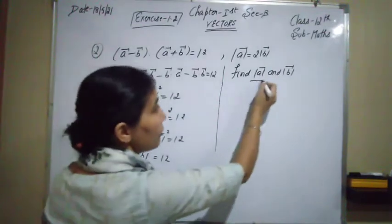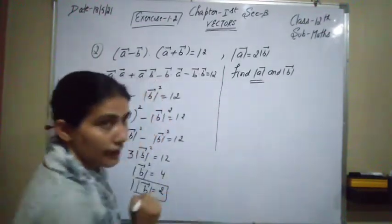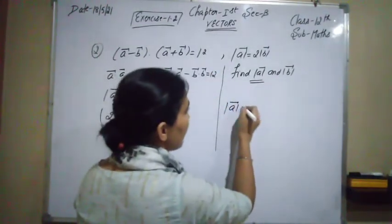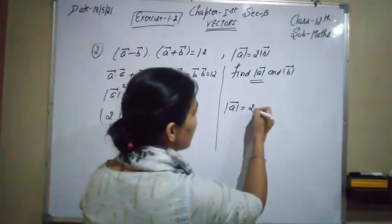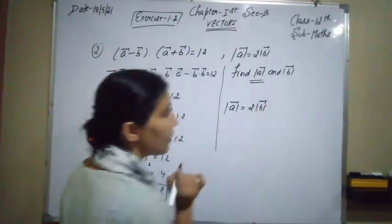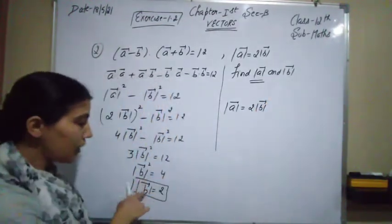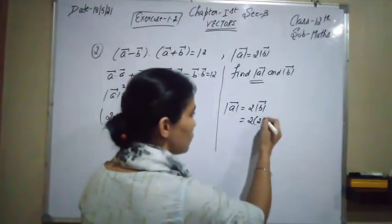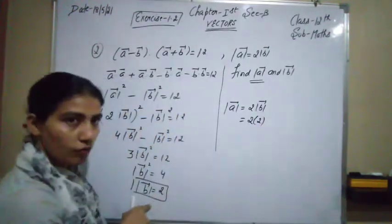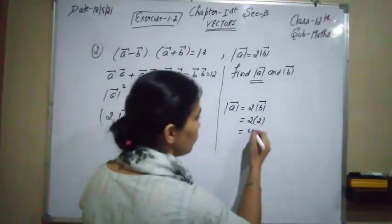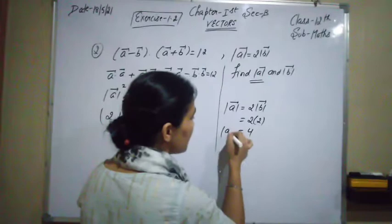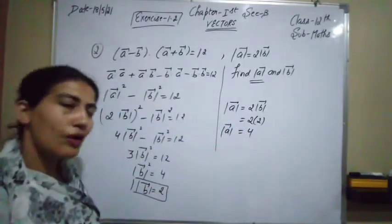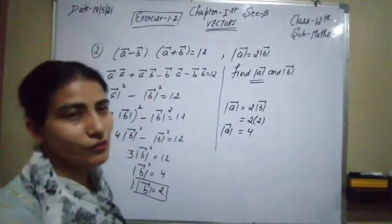So |b⃗| = 2 and |a⃗| = 4 are our answers for the second question. We can verify: |a⃗| = 2 times |b⃗| = 2 × 2 = 4. Come to the next question of this worksheet now.